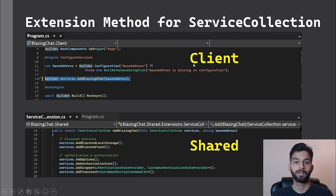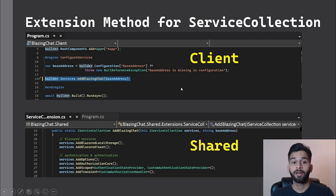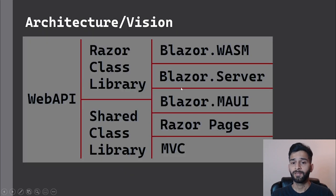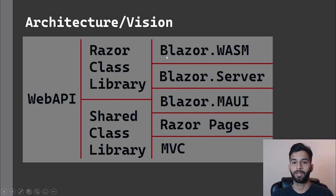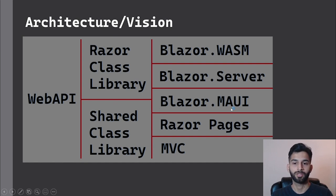Now why are we doing this? In the next couple of episodes I'm going to try and put Blazing Chat into a Blazor MAUI project, and I don't want to write duplicate code in my Blazor WASM project and Blazor MAUI project. I want to move as much code as possible from my Blazor WASM project to a common place so I can reuse it.